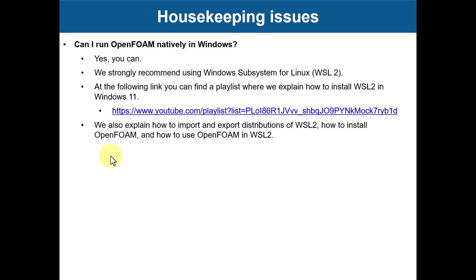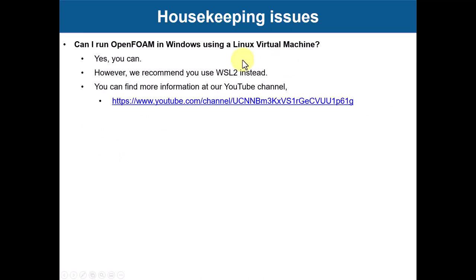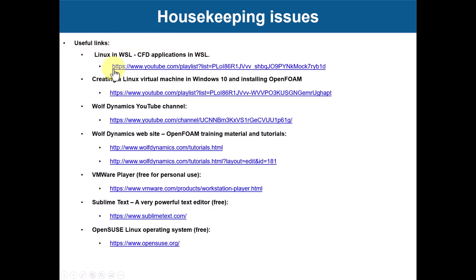With WSL2 you only have a Linux terminal without a full graphical user interface, but that's fine since we type commands anyway. You can also use a Linux virtual machine on Windows — that gives you the full graphical environment and window manager, but it uses more resources, so we recommend Windows Subsystem for Linux 2 instead. All links — the playlist, how to create a virtual machine, and download links — will be in the video description.